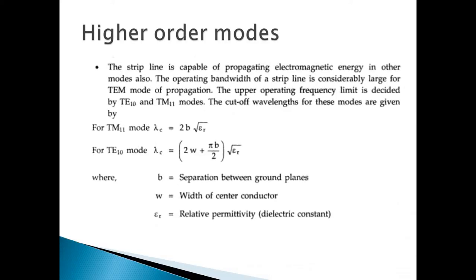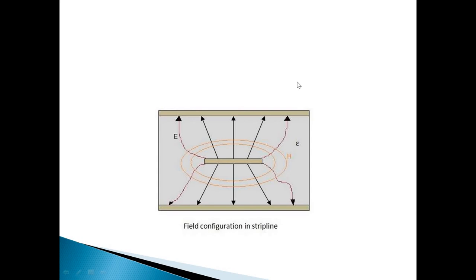The strip line can propagate higher-order modes. The upper cutoff frequency is limited by the two dominant modes: TE and TM waves. The dominant TE mode is TE10 and the dominant TM mode is TM11. For TM11, the cutoff wavelength is 2b√εᵣ, and for TE10 mode, it is (2w + πb/2)√εᵣ, where b is the separation between the two ground planes.